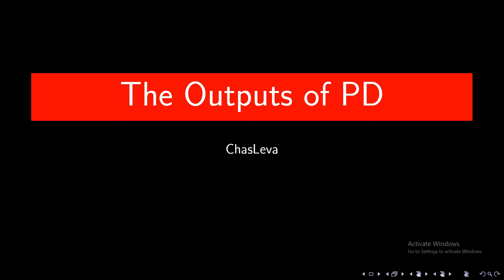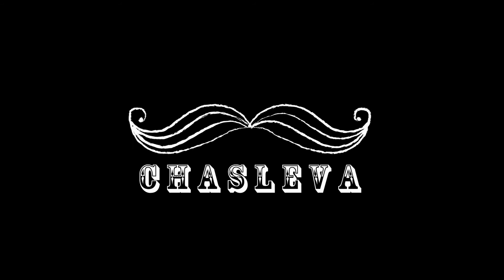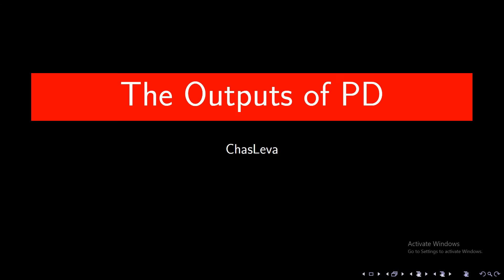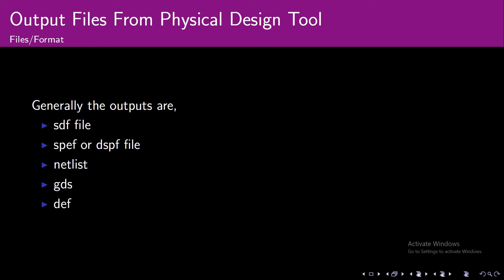We have already seen the inputs of physical design in the last video. Now let's get a small idea about the outputs from physical design tools. Generally, the output files from physical design tools are SDF file, SPF or DSPF, netlist, GDS, and DEF. We can have a good idea about these files in the latest slides.